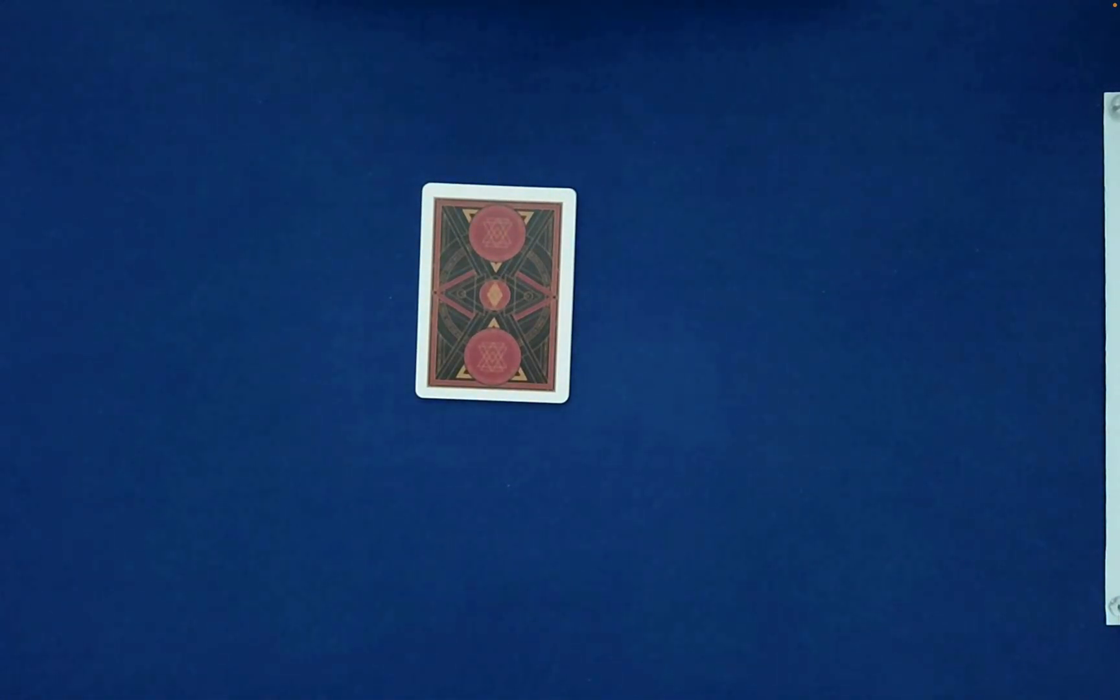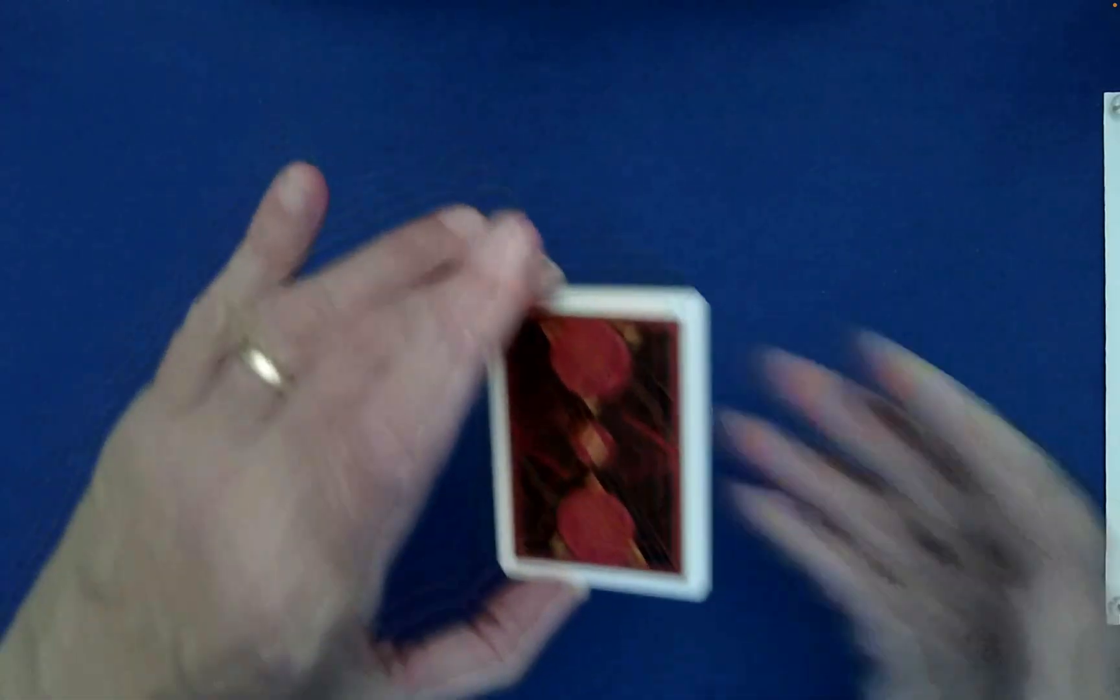Now if you imagine tracking the cards, if you had noted the identity of one of the cards at the beginning, how easy would it have been for you to track where that single card is right now? Now imagine doing that for all eight cards simultaneously. There's no way on this green earth anyone's going to be able to do that.